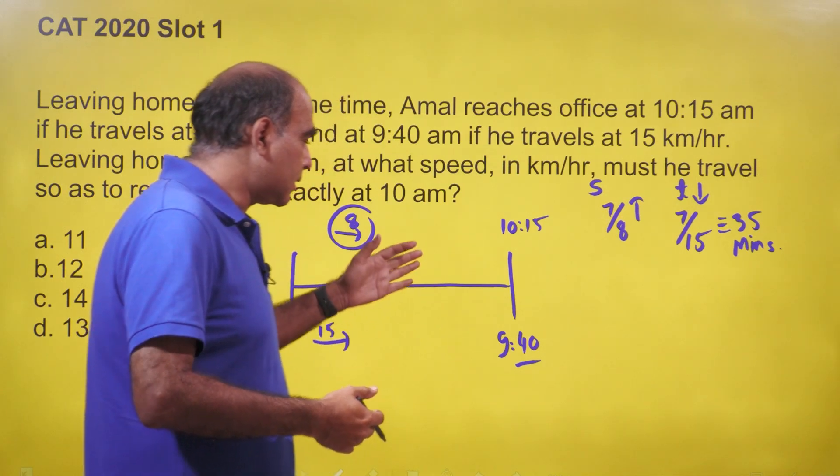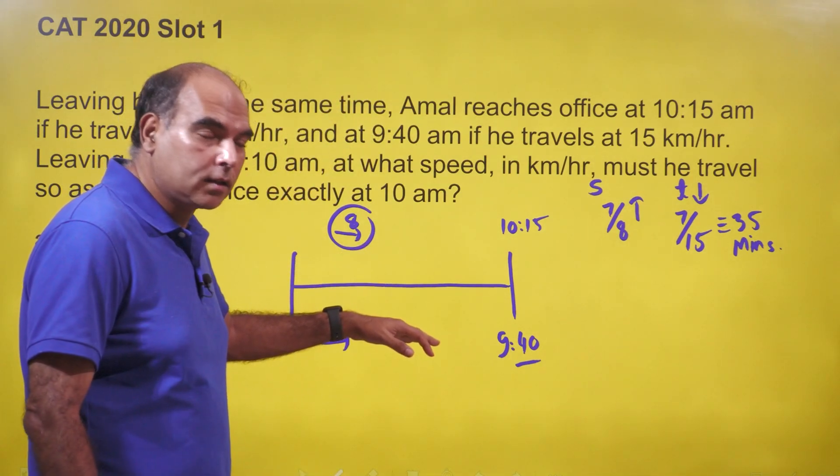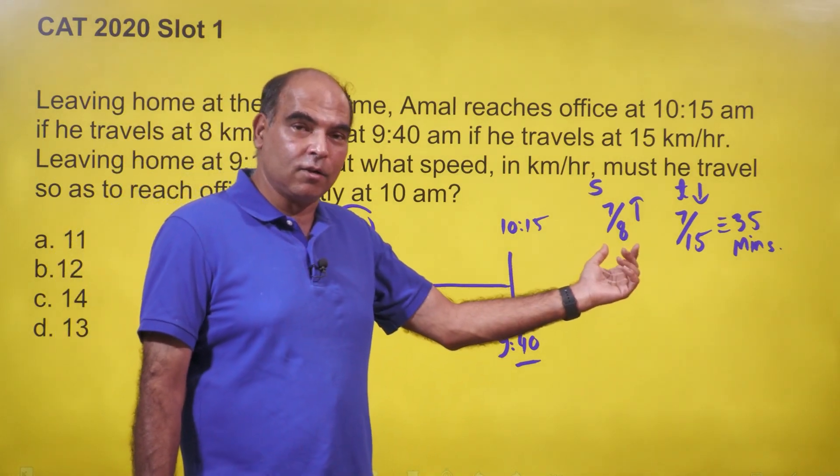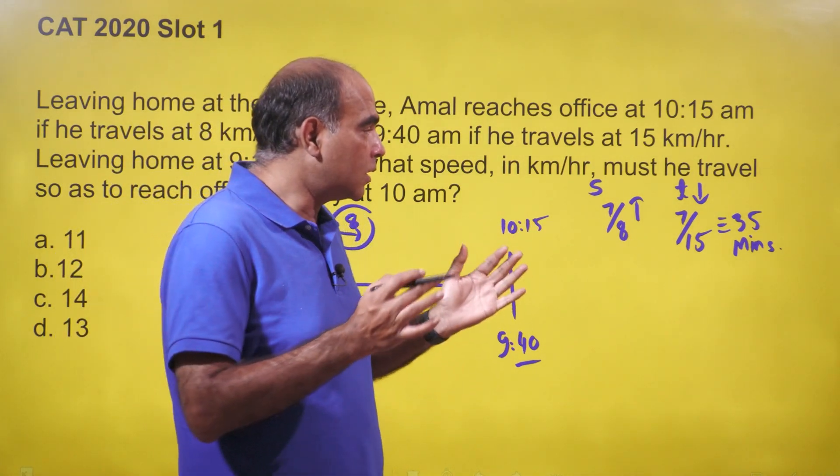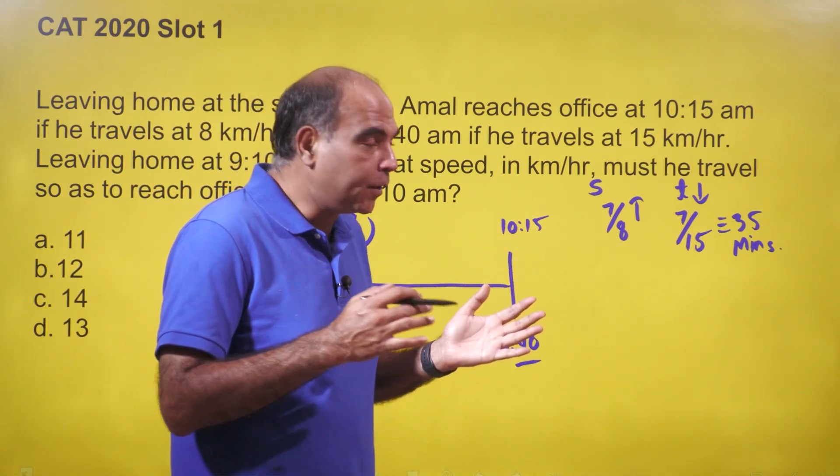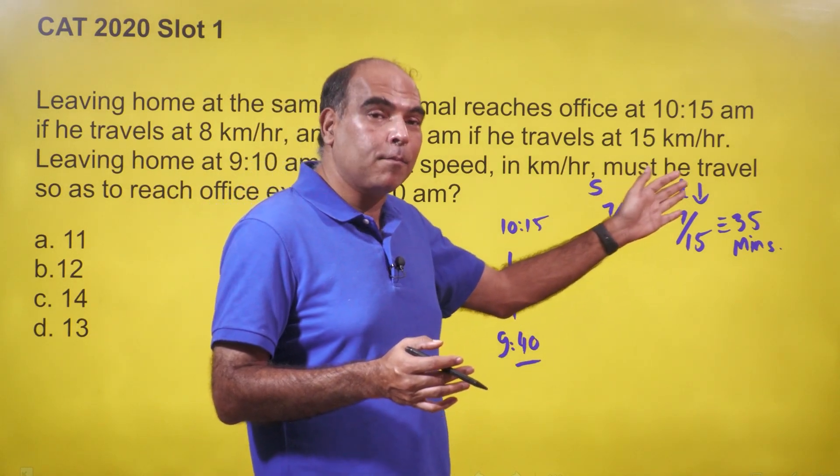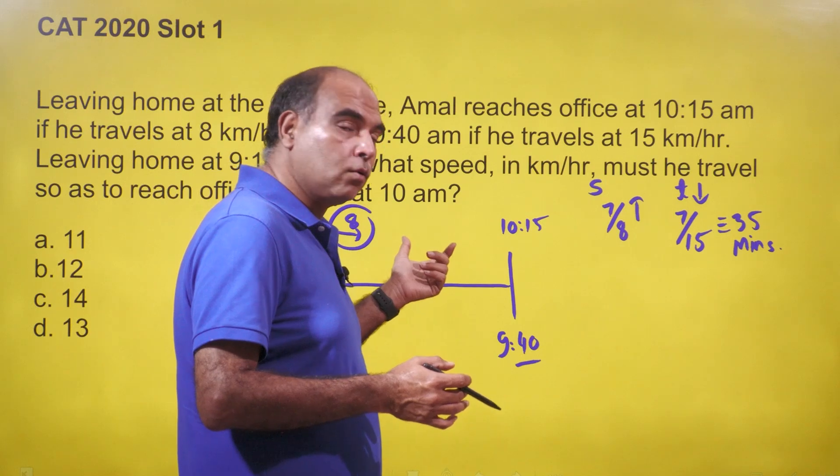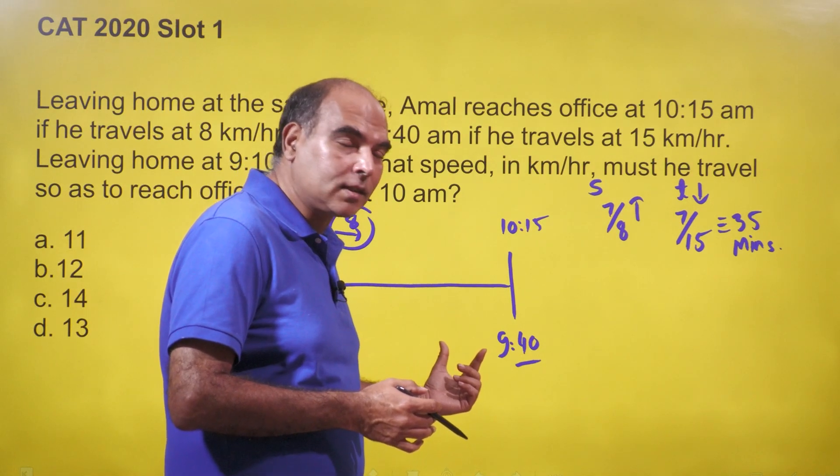The trigger is that distance is constant in these two journeys. If the speed is increasing from 8 to 15, it means the speed is going up by 7/8. If distance is constant, speed and time become inversely proportional to each other. It means that the time must be reducing by 7/15. From here to here, whatever time this took, this time is 7/15 less.